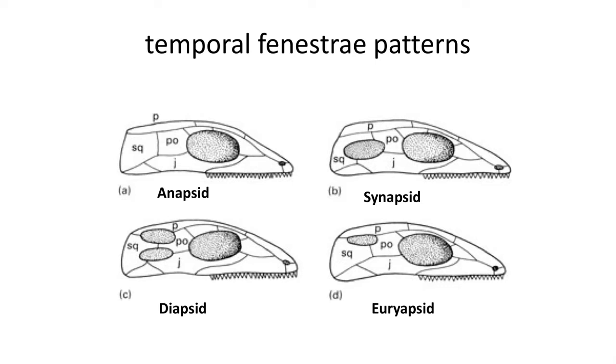The anapsid condition is where the skull lacks any temporal fenestra or opening. Most of these fossil anapsid reptiles follow that rule where the orbit or the eye socket is the only large opening on the side of the skull, although some lighten their skulls with gaps in the ventral edge of the skull.